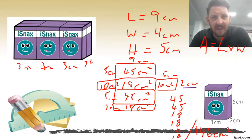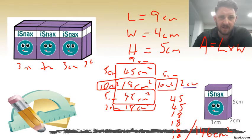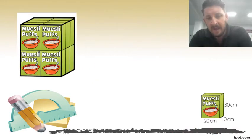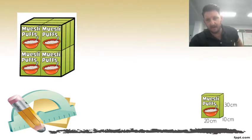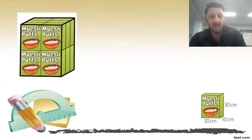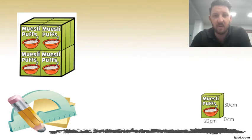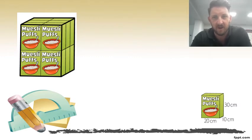Here's another example — we're looking at muesli puffs. Our muesli puff box has a length of 20 centimeters, a width of 10 centimeters, and a height of 30 centimeters. Now we have to look at a larger box made up of multiple boxes on the other side.